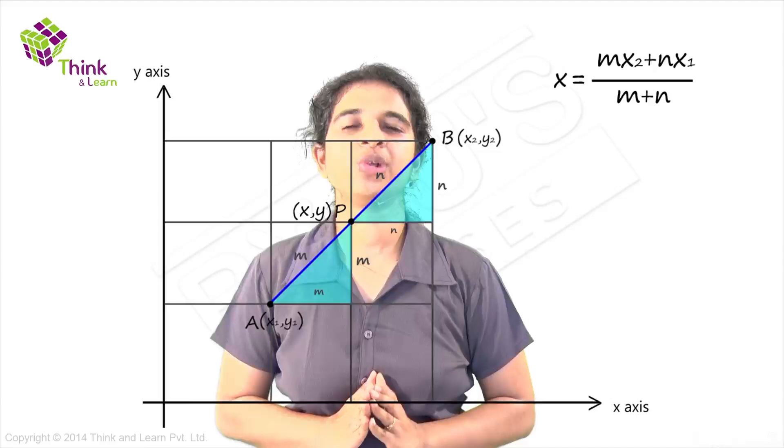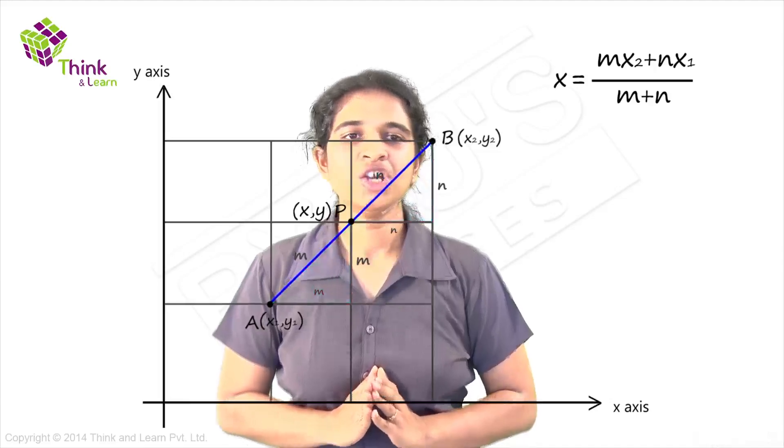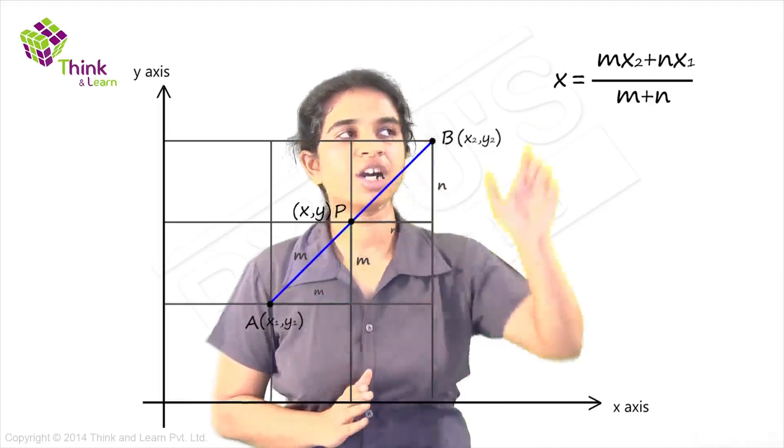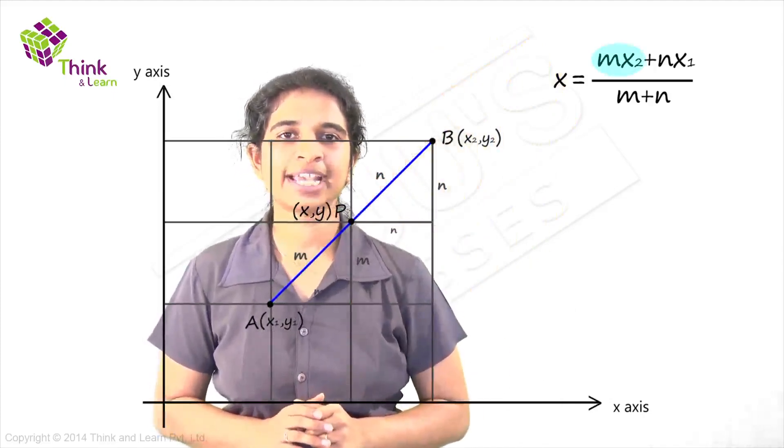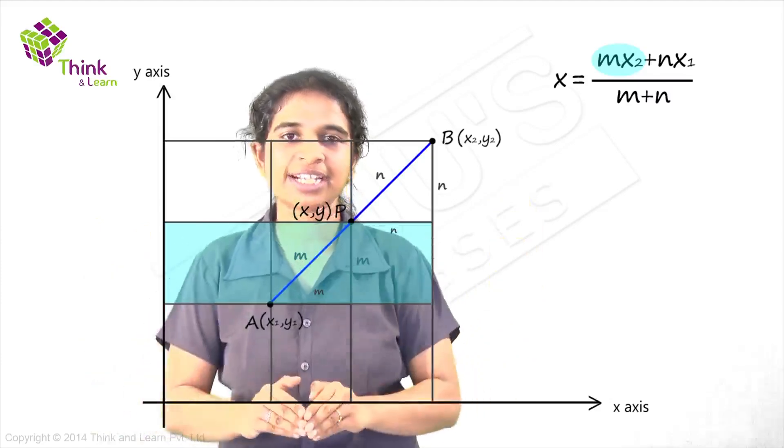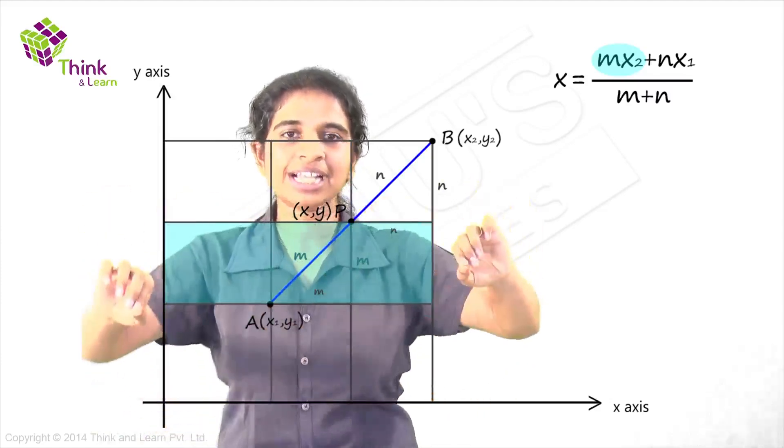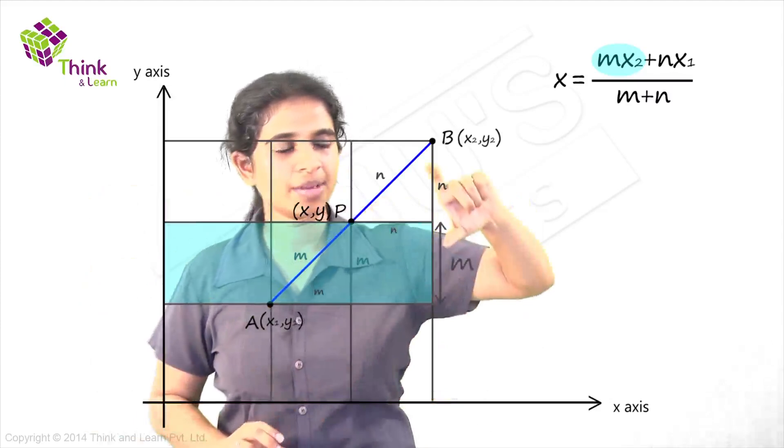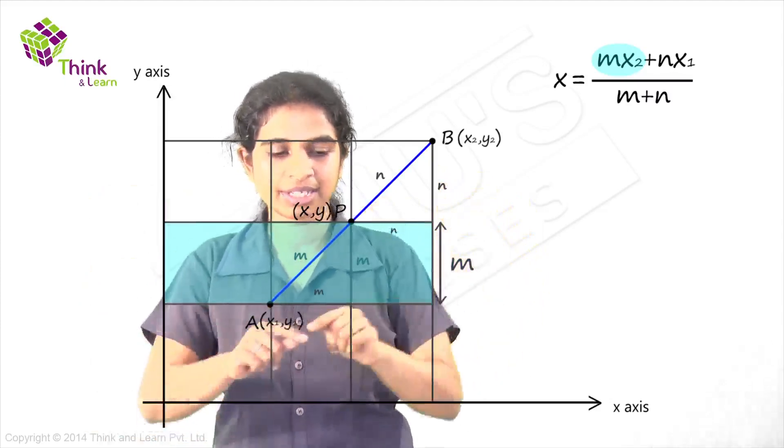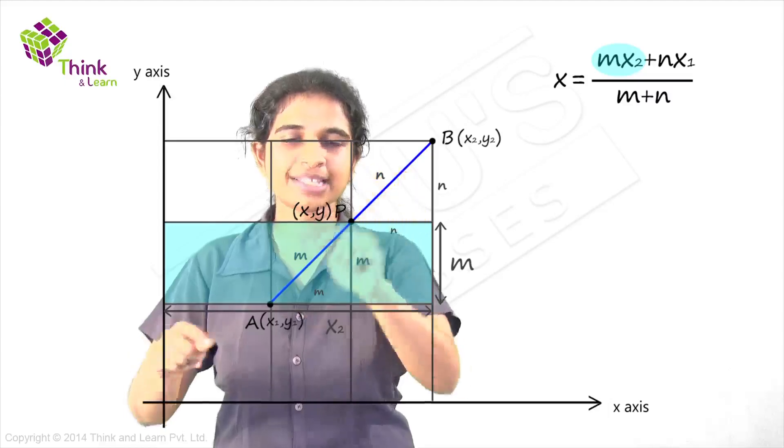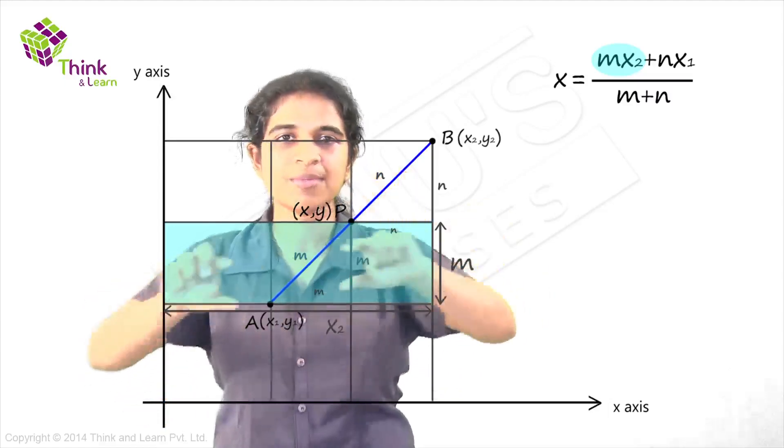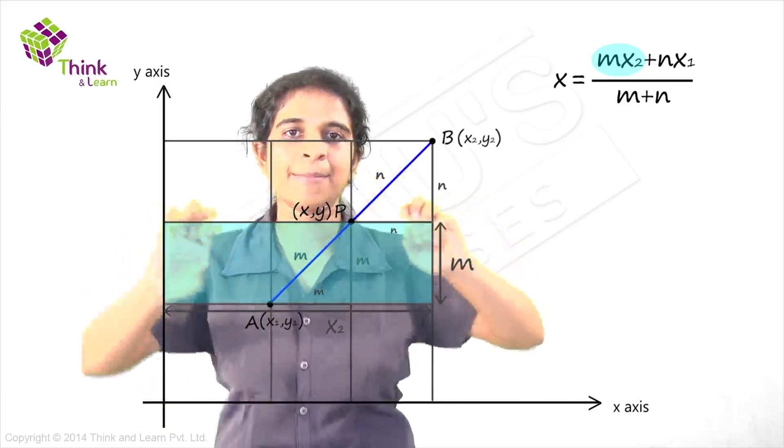Let's try to now visualize what our section formula gave us. So in section formula, you have a term mx2. How can you see mx2 in this diagram? mx2 is nothing but the area of this large rectangle. Why? Because this height is m and this length is x2, the x coordinate of point B. So this is nothing but the area mx2. Let's shade this.